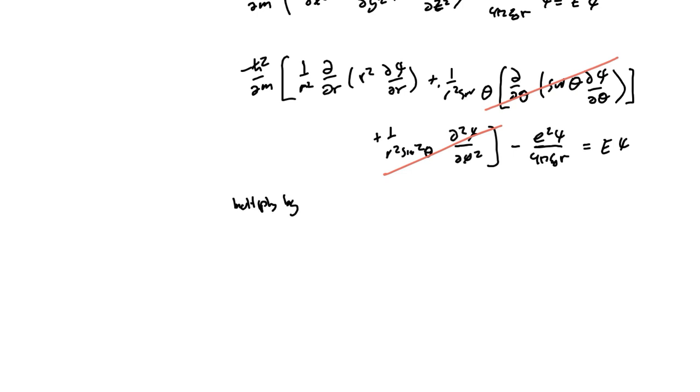And then I'm going to multiply through by R0 squared times minus 2m over h bar squared. That way, the coefficient of this first term is going to be R0 squared.